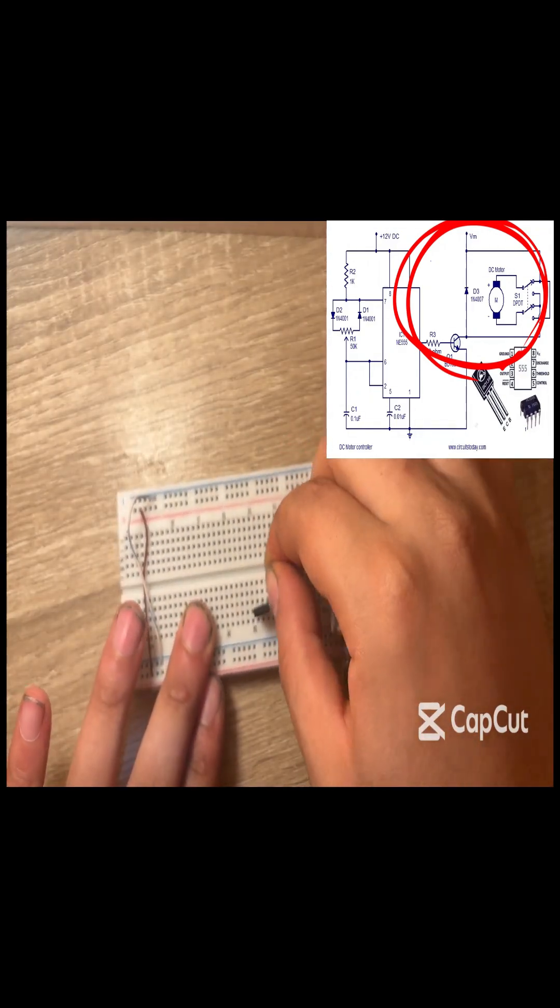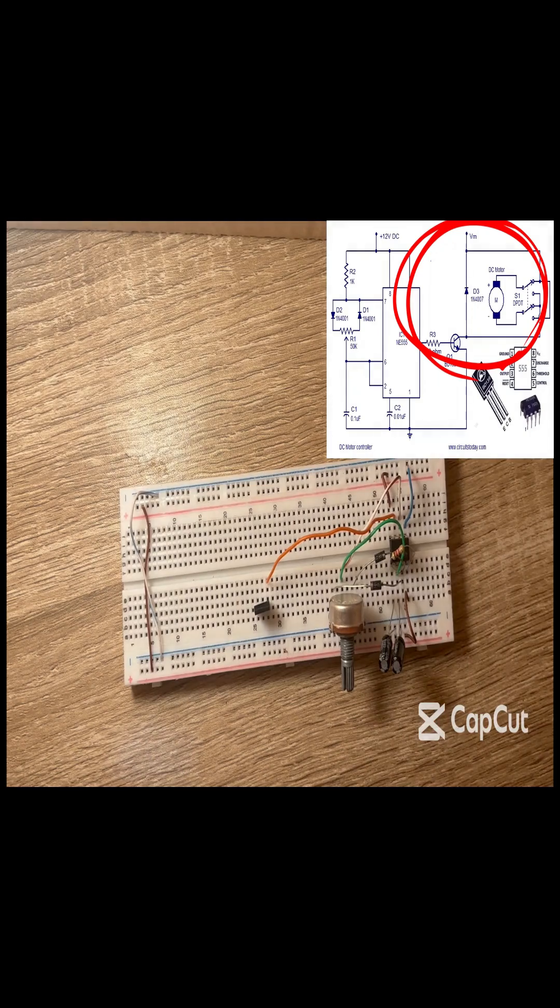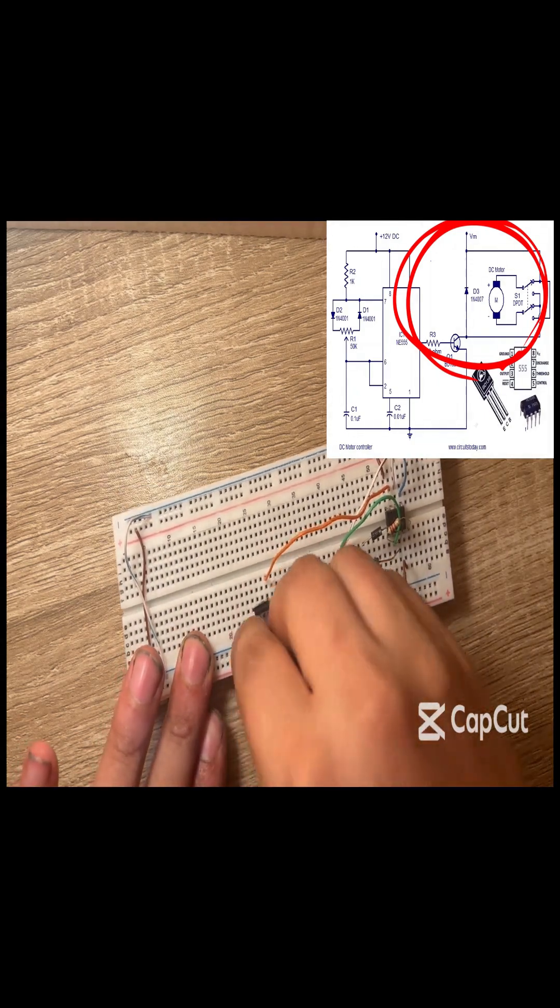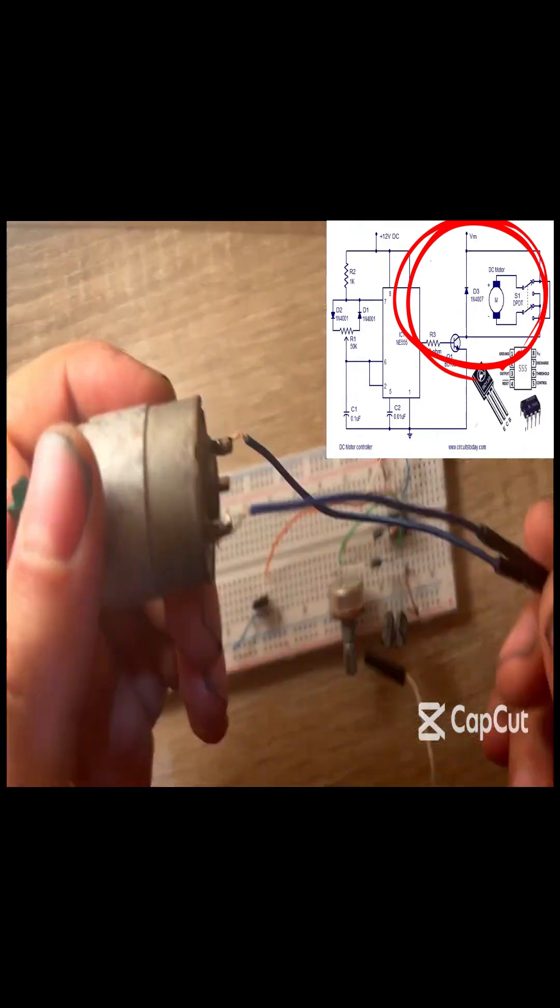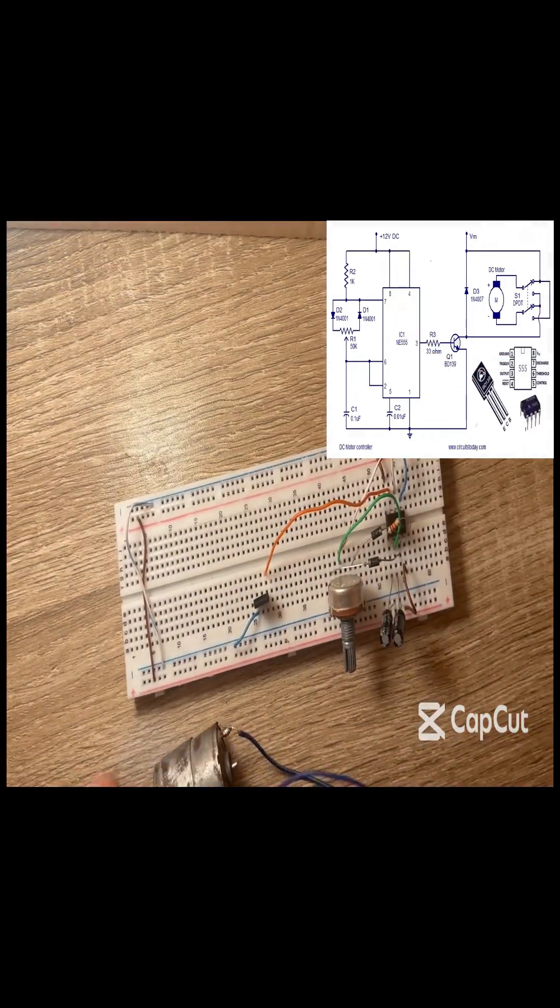Base to pin 3 output pulses. Emitter pin 1 to ground. Collector pin 2 to motor terminal.